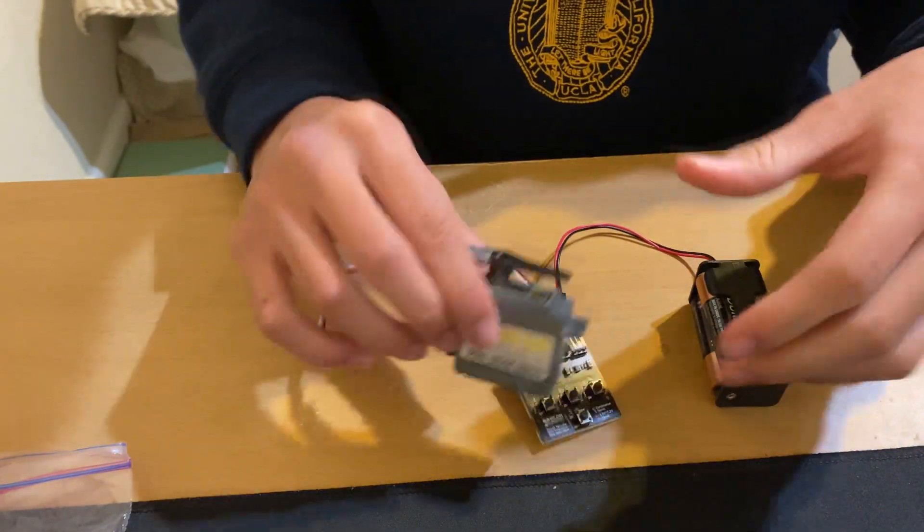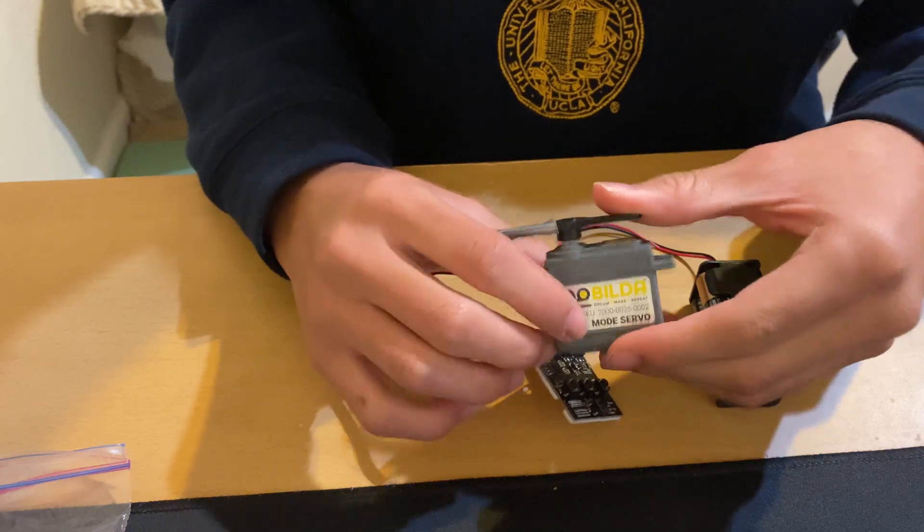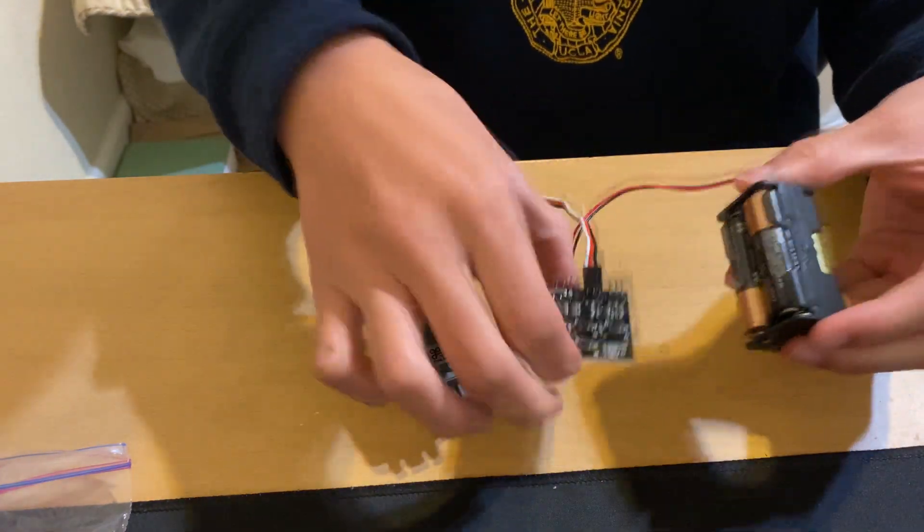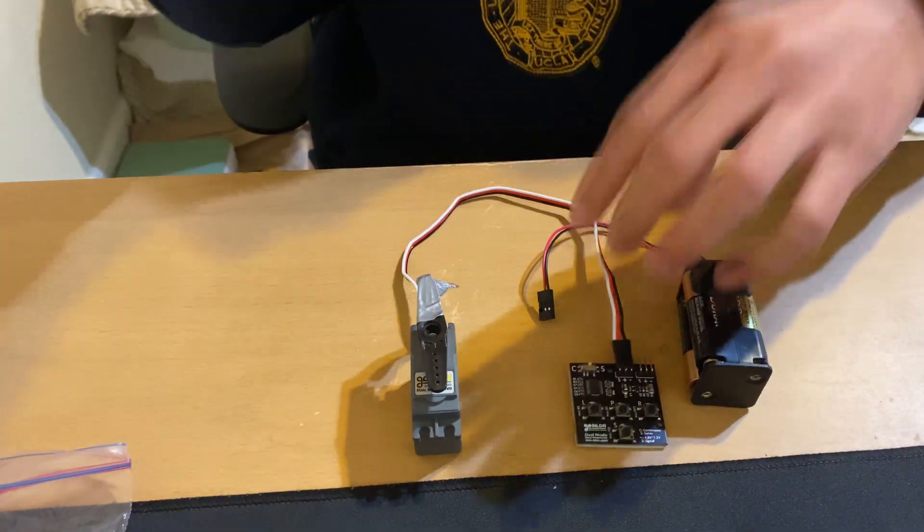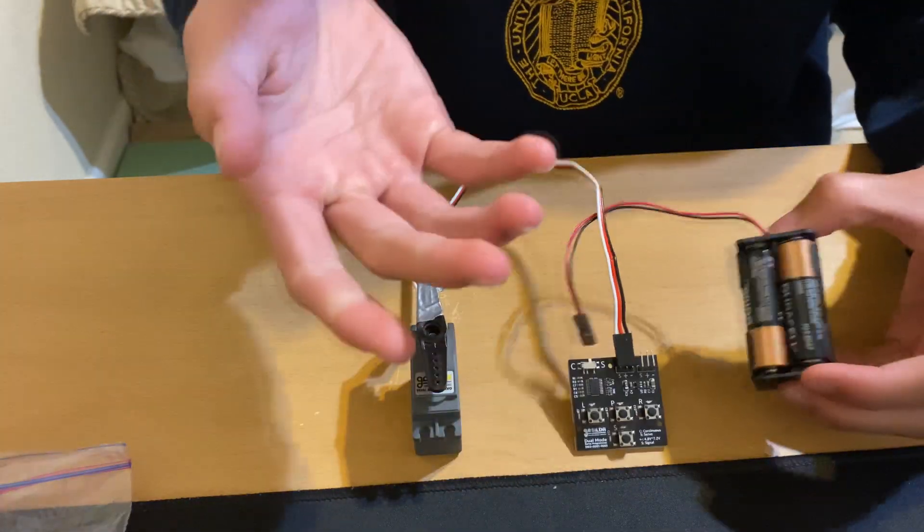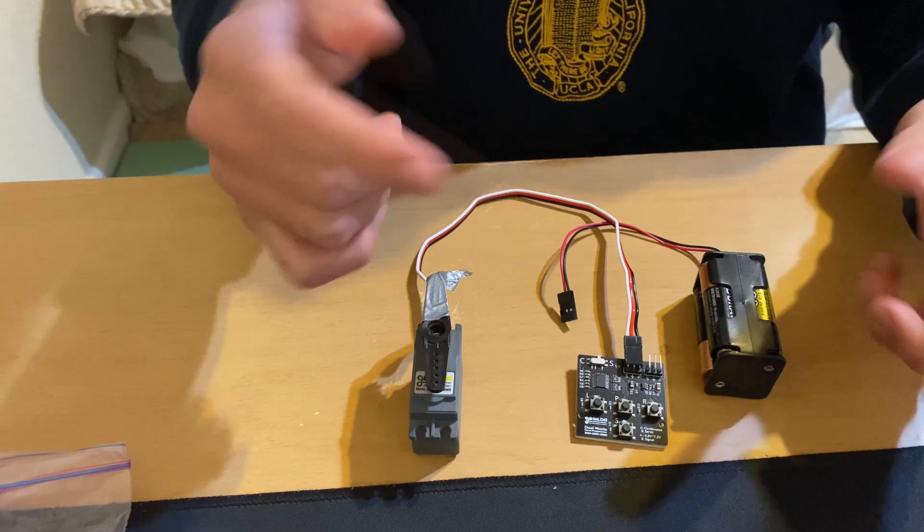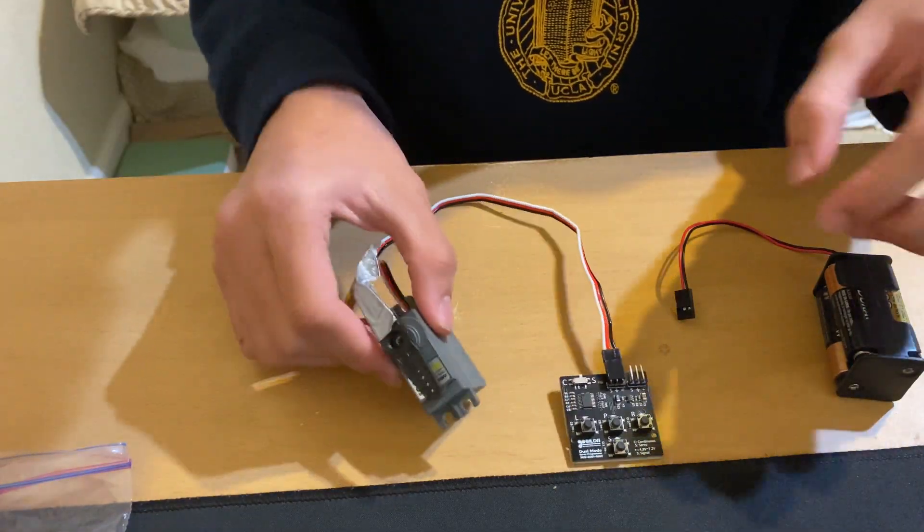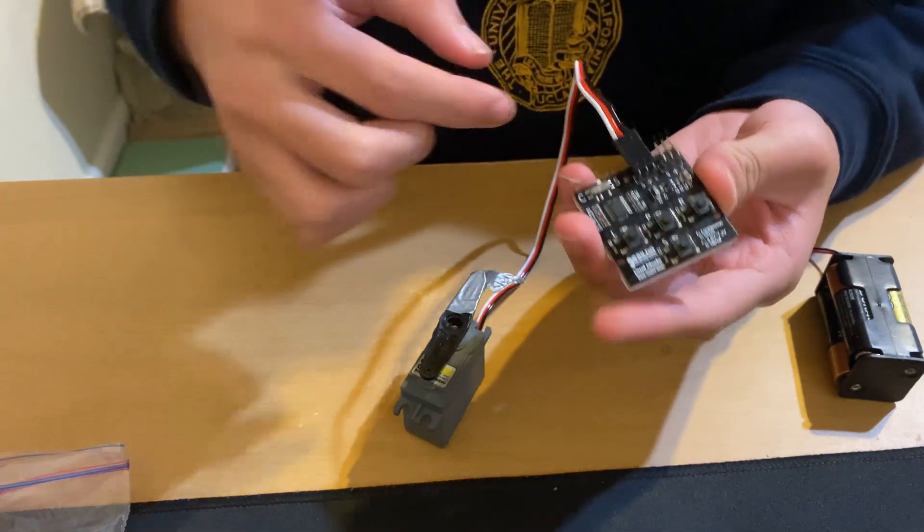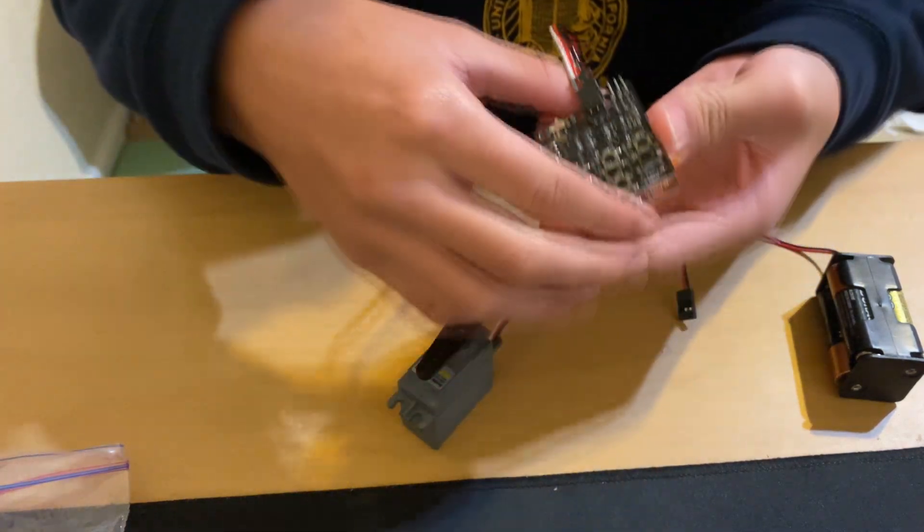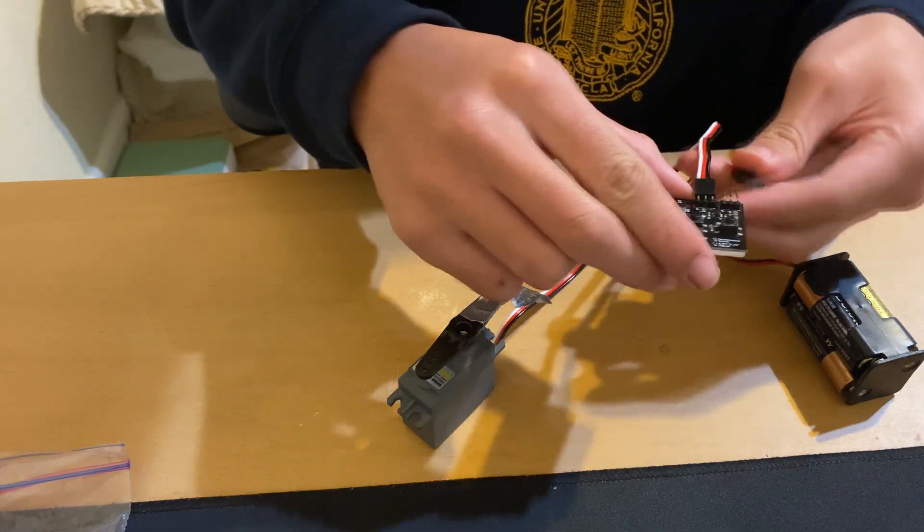So how do we change modes from continuous and normal servo? Well, we're going to need something like this. This is called from GoBuilder, just a servo programmer. These are fairly cheap, go around for $10 and I'll leave a link in the description where you can get it. So the first thing we want to do is very important: the white string has to line up with this S and then we're going to take our battery and plug it in.